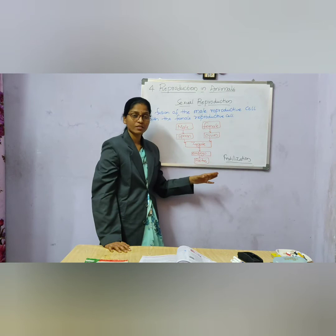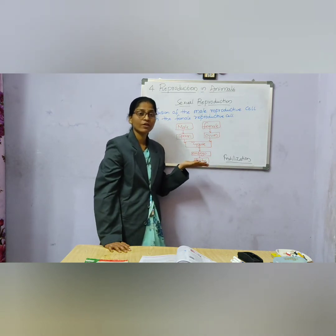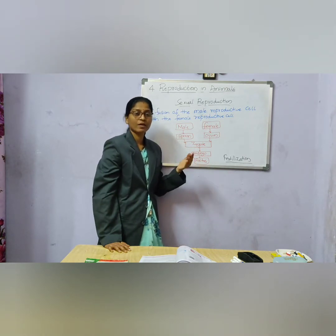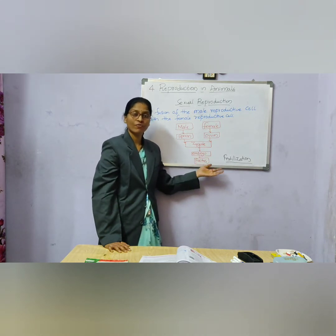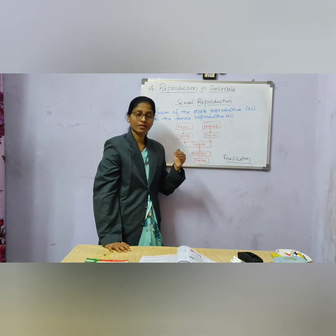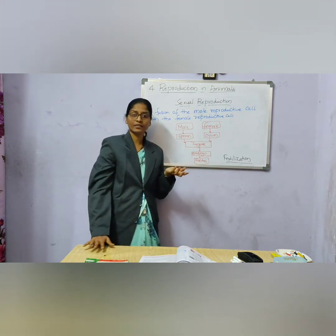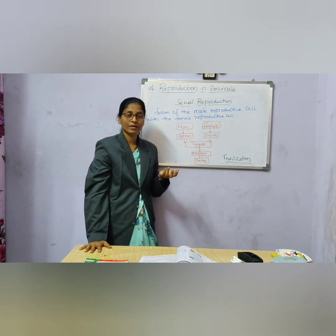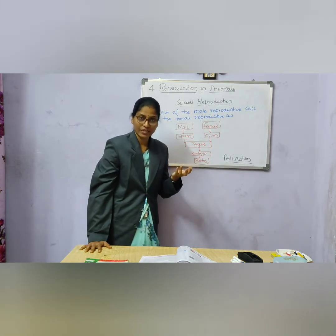In some animals, the fertilization process takes place inside the body of the female organism — for example, insects, lizards, and human beings — this is called internal fertilization. In some animals, fertilization takes place outside the body of any organism — for example, frogs — this is called external fertilization.